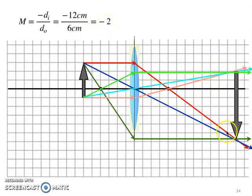Divided by our object distance of positive 6 gives us a magnification of negative 2. Negative means our image is inverted. That matches our diagram.